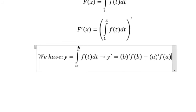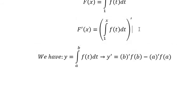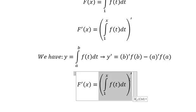Now we need to first find the derivative of b, and we change the value of b for t. Similarly for a. Because this is about the bottom, we have the negative side here. So this one we have like this.